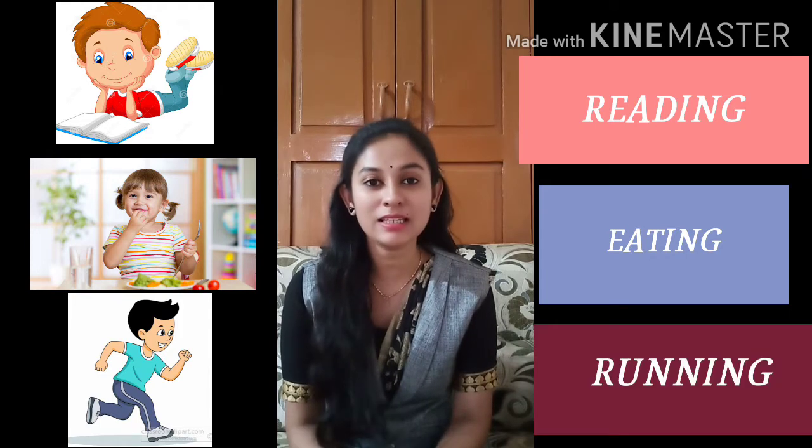You can see three pictures here. In the first picture, what is the boy doing? Correct — he is reading a book. In the second picture, which action is she doing? Yes — she is eating her food. Now the third picture — which action is the boy performing? Yes — he is running. So in all three pictures, the actions they were performing are running, eating, and reading. These action words are known as verbs.